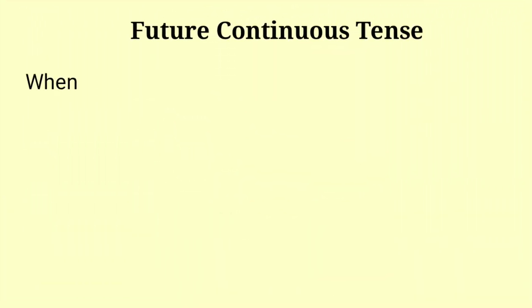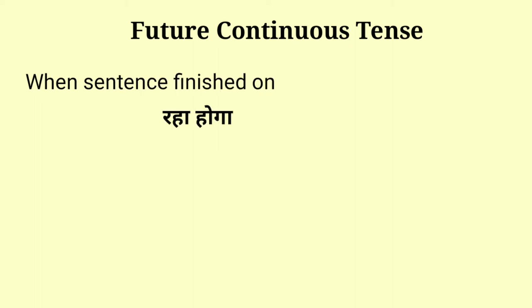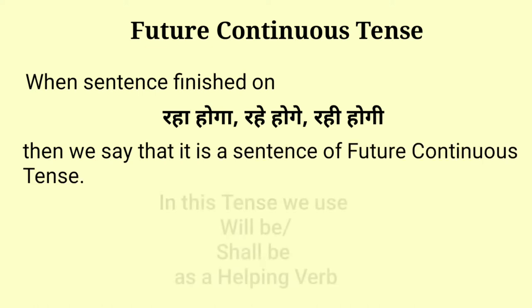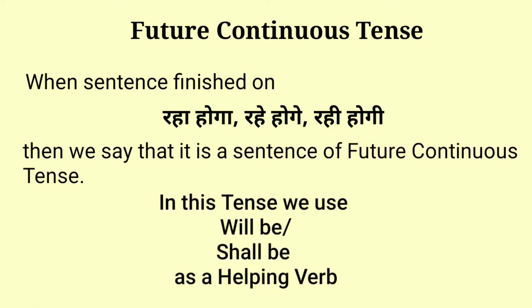Future continuous tense: when a sentence ends on 'Raha hoga', 'rahe hogay', or 'rahi hogi', then we say that it is a sentence of future continuous tense. In this tense we use 'will be' or 'shall be' as a helping verb.